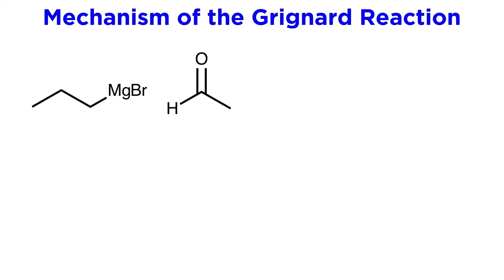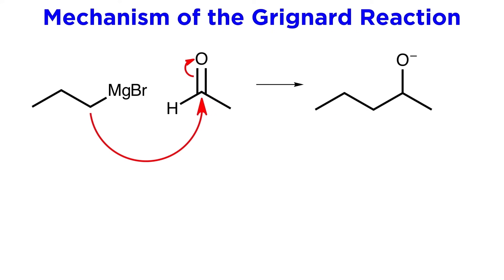Say we have this propyl-Grignard reagent reacting with this 2-carbon aldehyde. The carbon bound to magnesium will do the attacking, so let's draw an arrow from there, landing on the carbonyl carbon, which is the electrophile because of the polarity of the carbonyl. This pi bond gets kicked up onto the oxygen, and we are left with this oxyanion, with MgBr⁺ hanging out nearby making an electrostatic interaction. We now have a larger molecule as we have formed this new carbon-carbon bond.